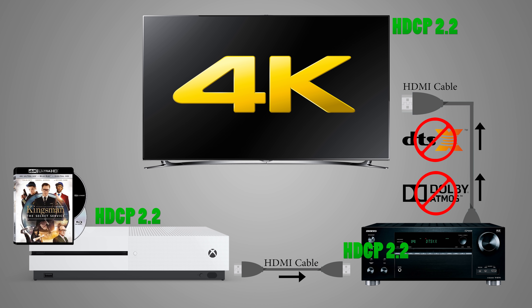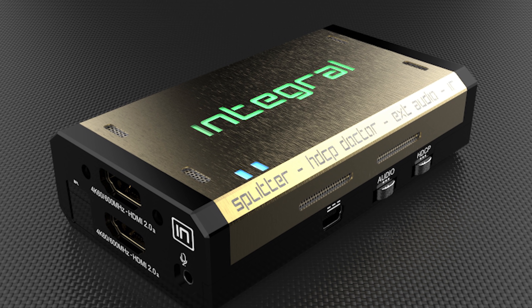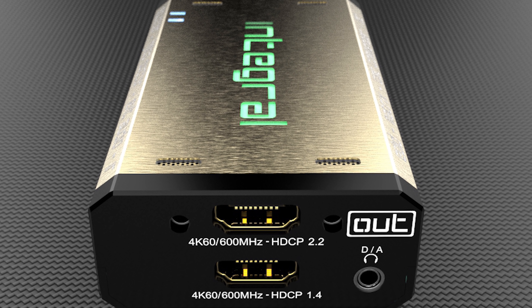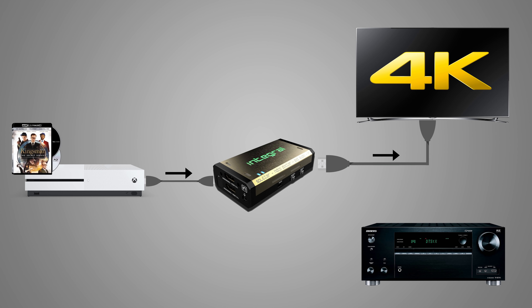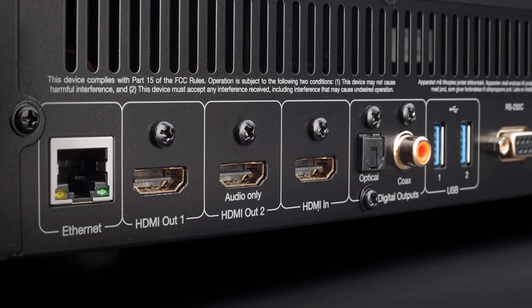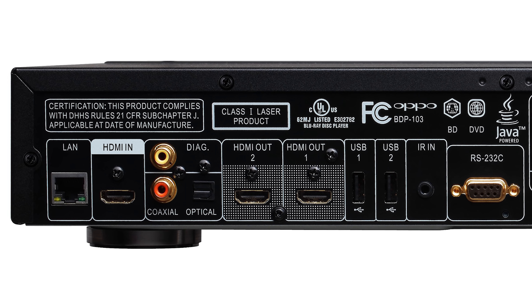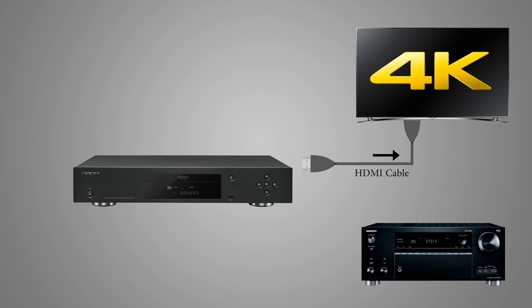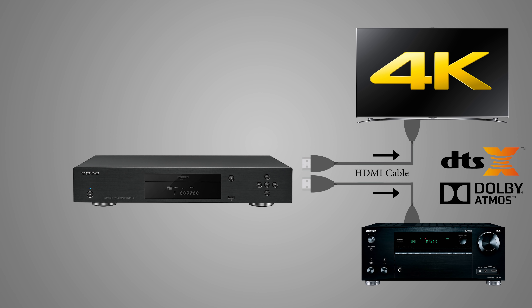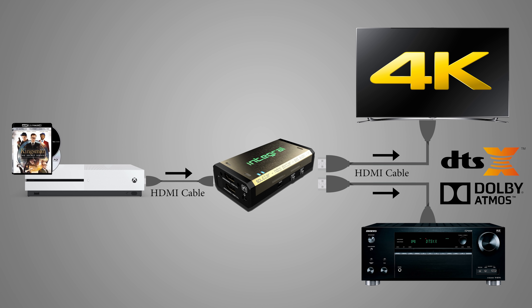If you have an older audio receiver and want to get the latest formats like Dolby Atmos, you have two options. The first is to get an HDCP 2.2 HDMI splitter, which lets you use one HDMI cable to send 4K video to your TV and the other cable to send audio to your receiver. The other option is to use devices that have two HDMI outputs — some Blu-ray players have more than one output for this reason — allowing you to use one port for your TV and the other for your receiver. In both cases, you wouldn't be affected by HDCP and could take full advantage of 4K HDR and Dolby Atmos.